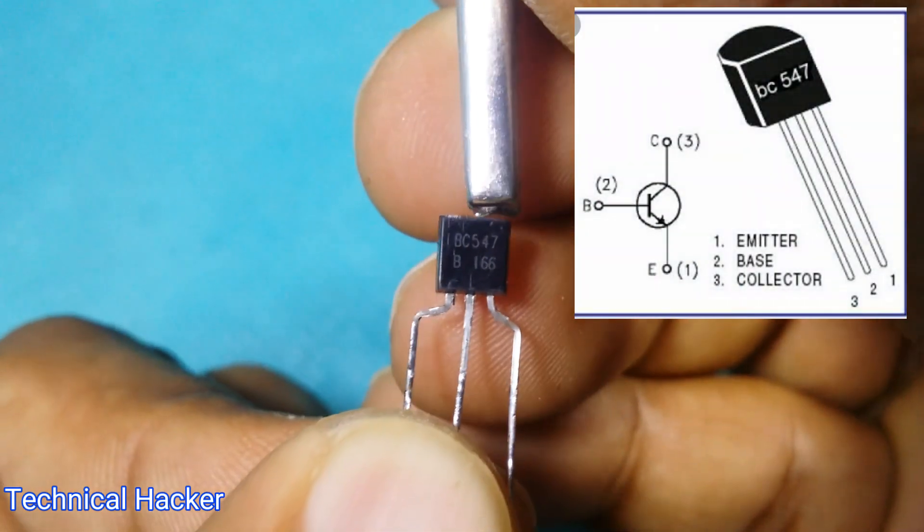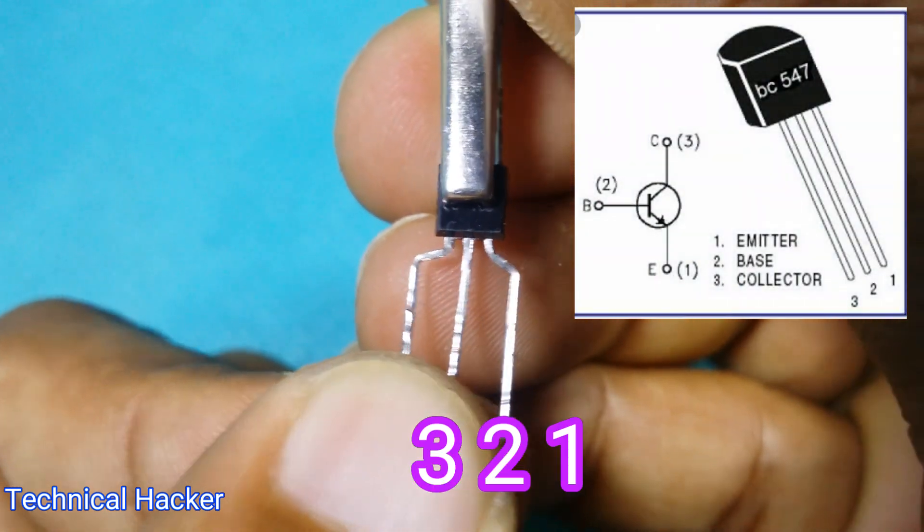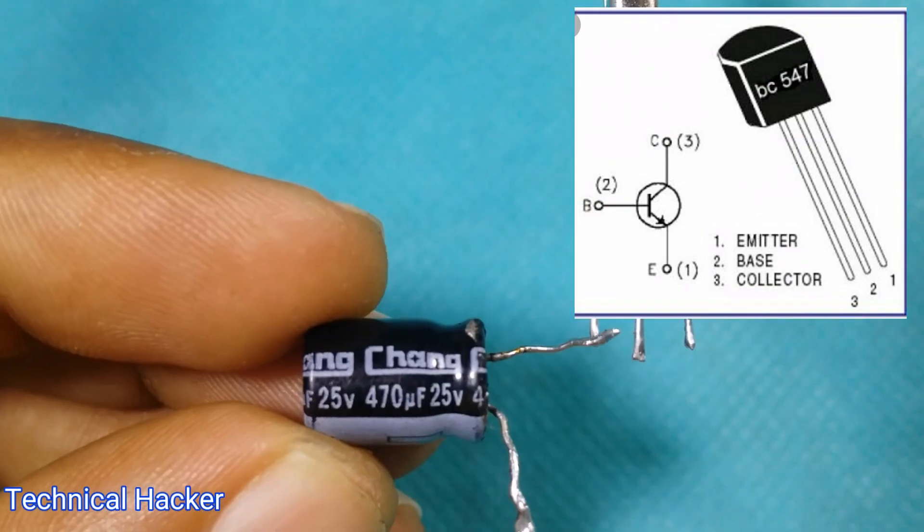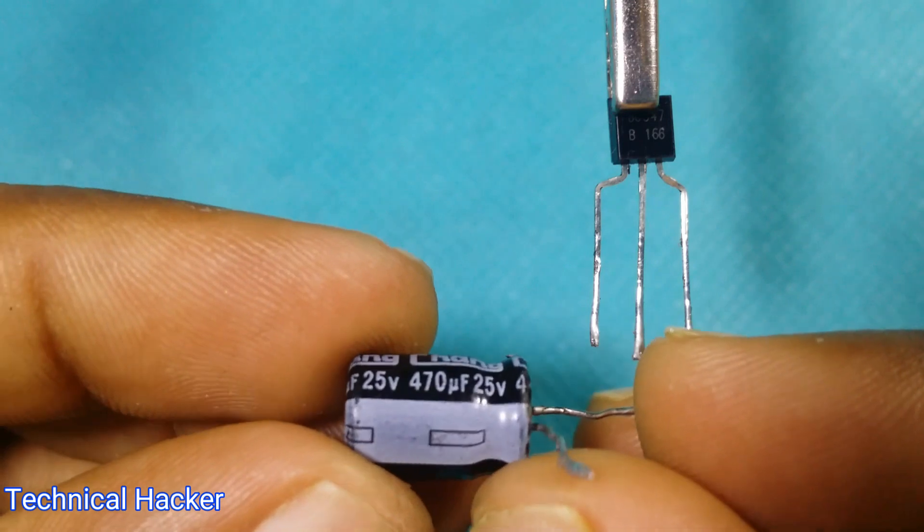BC 547 transistor have three legs: number one emitter, number two base, and number three collector. Capacitor have two sides: positive side and negative side.